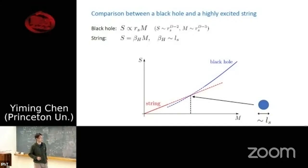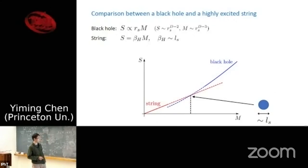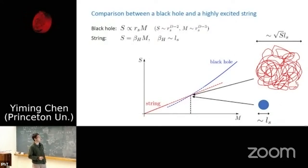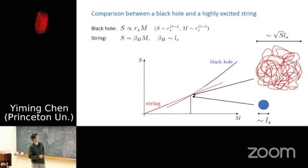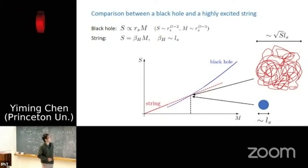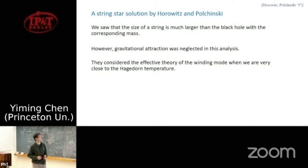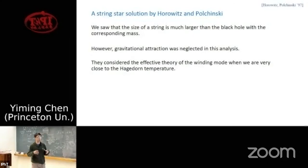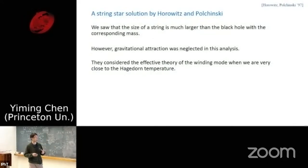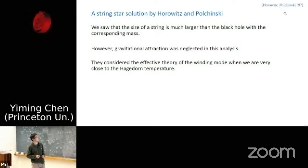This is very provocative: since the black hole has the same entropy and size as the string, maybe we should think of the black hole as a string. But this naive picture is not entirely correct, because the physical size of the string is much larger than the fundamental string size — once you excite the string it gets longer, and this size grows as the square root of its entropy, much larger than the fundamental string scale. In this naive analysis, gravitational attraction was neglected. One might expect that once you take gravity into account, it will make the string smaller, and perhaps gravity is just strong enough to bring the string to the size of a fundamental string at this mass. This problem was analyzed by Horowitz and Polchinski.